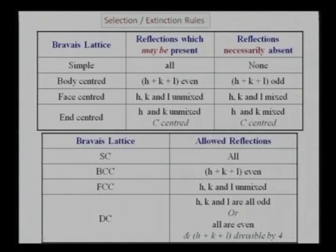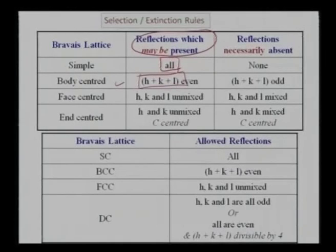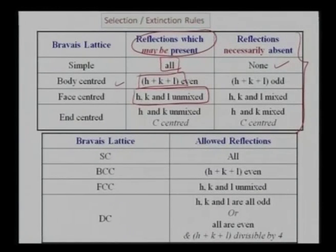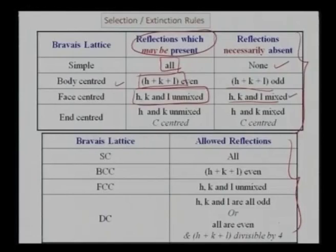In X-ray diffraction, for a simple cubic all reflections may be present. For body-centered cubic, only when h+k+l is even do I get a reflection. For face-centered cubic, h, k, and l must be unmixed — all odd or all even. For n-centered I need h and k unmixed. For BCC, reflections are absent when h+k+l is odd; for FCC, when h, k, l are mixed.